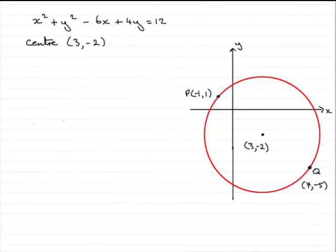Now, in order to do this part of the question, what I've done is I've sketched the circle and we know that the circle has a centre at 3 minus 2 and we're told the points P and Q lie on the circumference. P has coordinates minus 1, 1 and Q has coordinates 7, minus 5. P and Q lie on the circumference of the circle but the question is, is PQ a diameter?